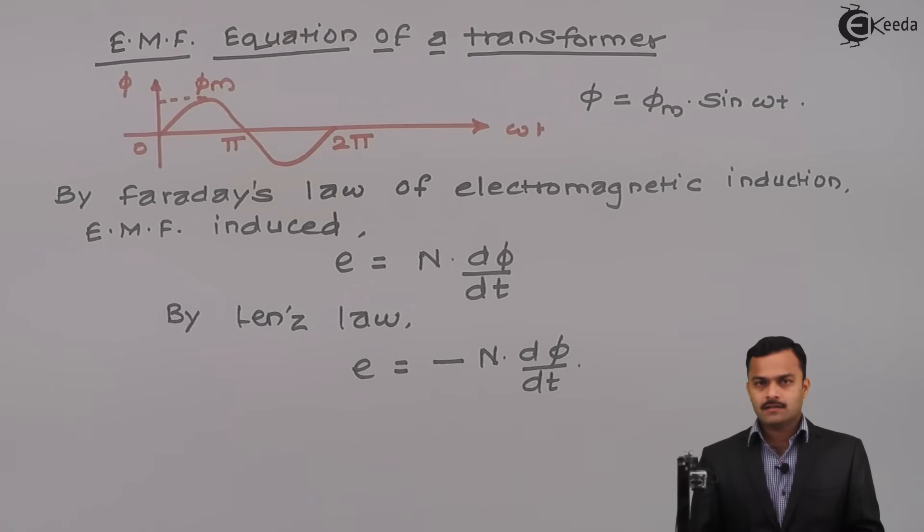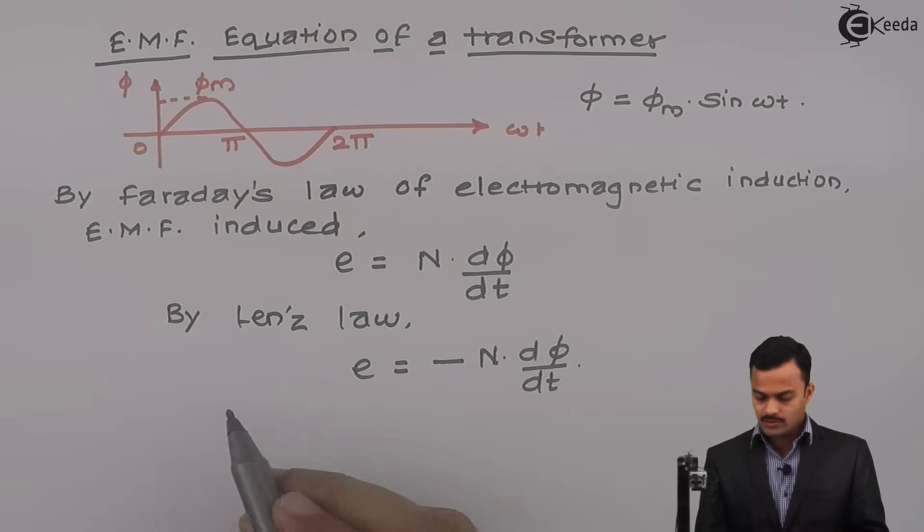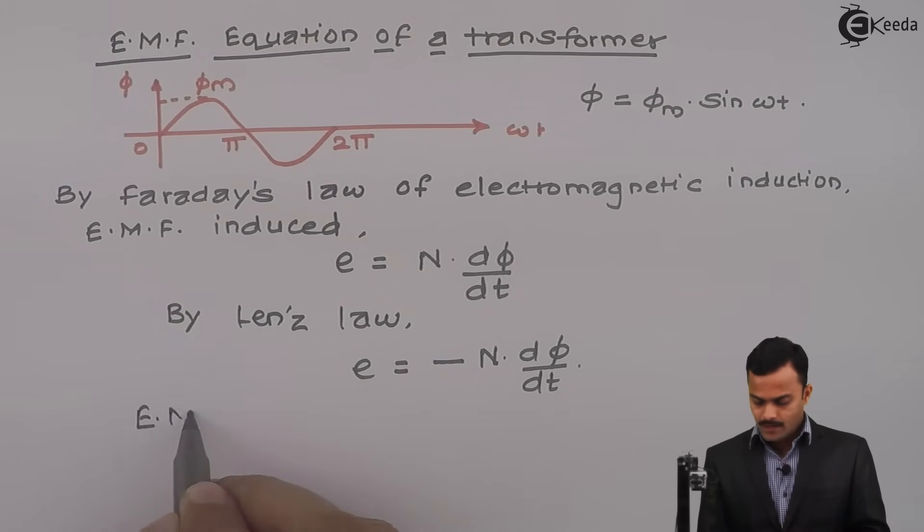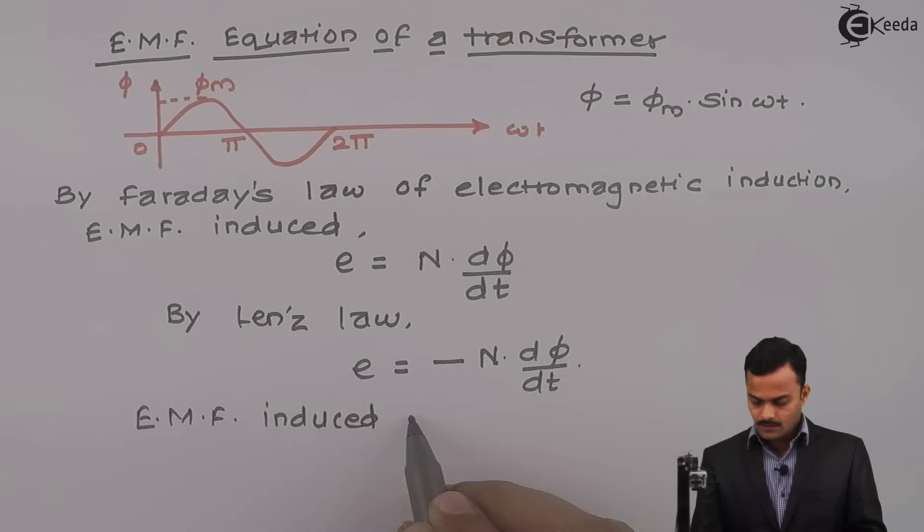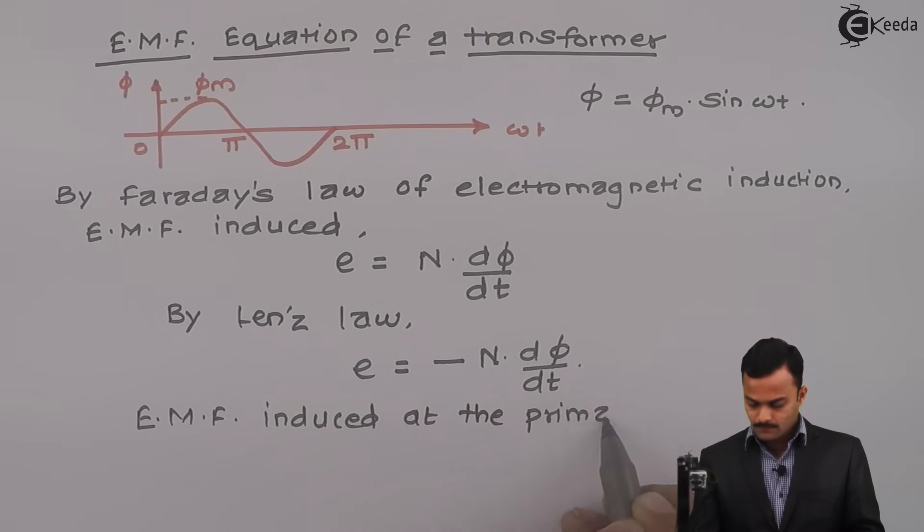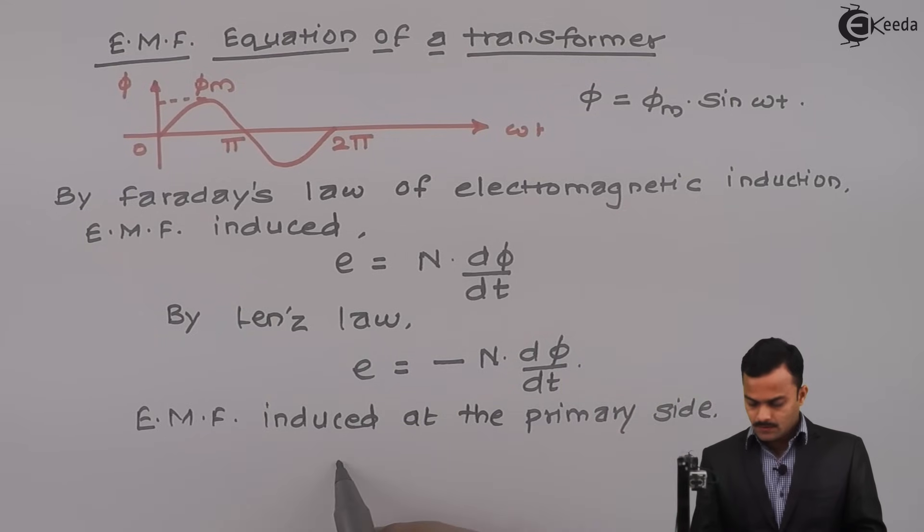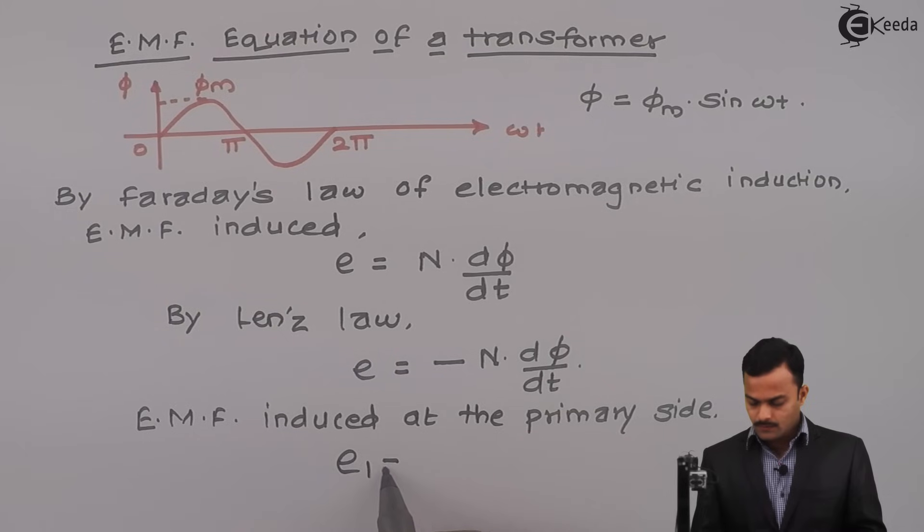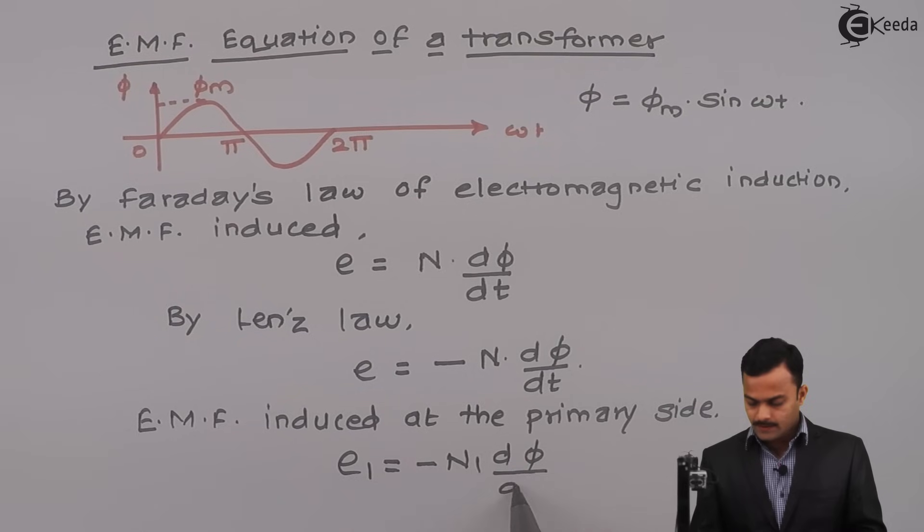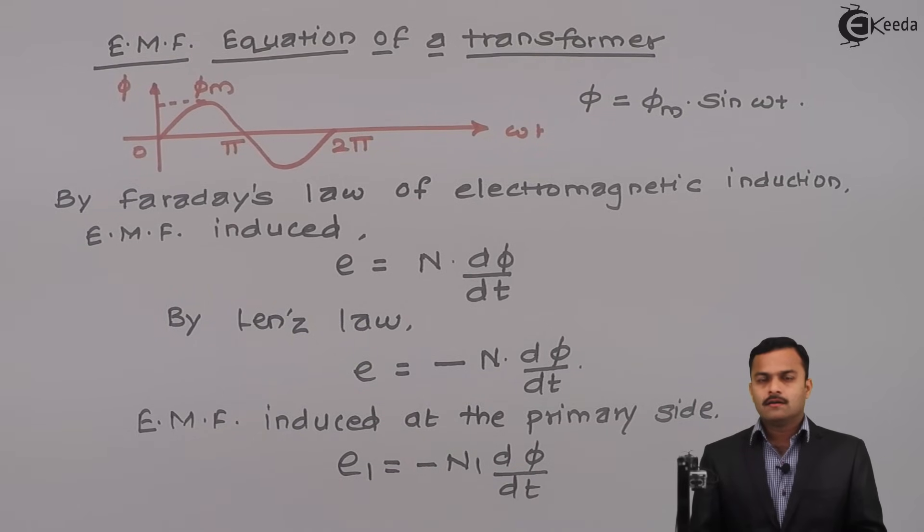This is a generalized expression. We are talking in terms of primary number of turns, secondary number of turns with respect to transformer. So I can write over here EMF induced at the primary side E1 equal to minus n1 d phi by dt, where n1 is nothing but number of turns of primary winding.